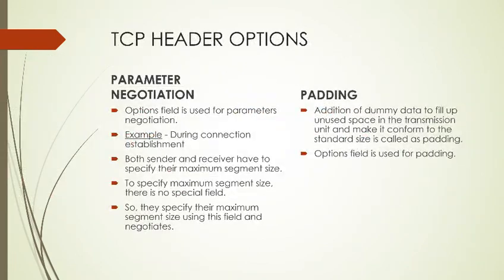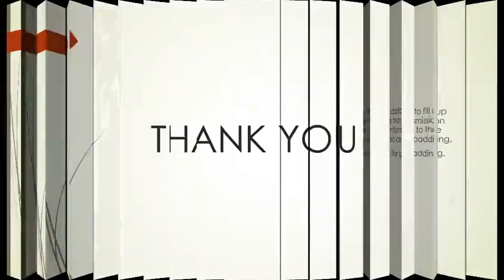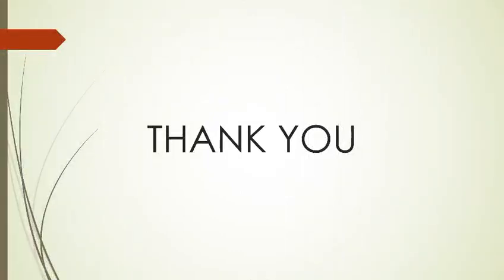Parameter negotiation: during connection establishment, both sender and receiver must specify the maximum segment size. Since there is no special field for this, they use the options field to specify and negotiate the maximum segment size — hence this option is called parameter negotiation. Padding is the addition of dummy data to fill up unused space in the transmission unit, making it a standard size. That's it for today's video — see you in the next one, thank you.